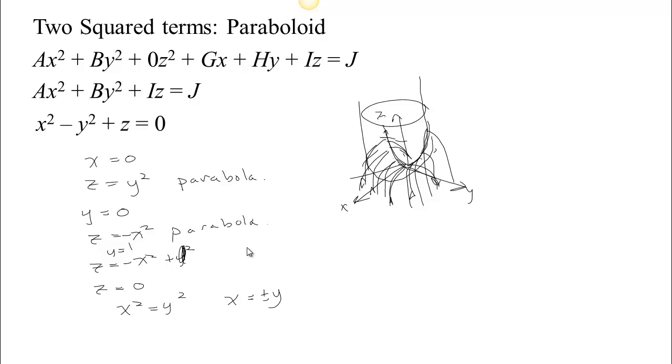If we choose z to be some other value, like if z = 1, then we have x² - y² + 1 = 0. So if we turn this around, we have y² - x² = 1. I just moved the two variables over to the other side, and that we recognize as a hyperbola.